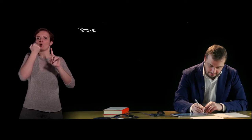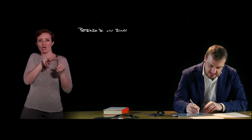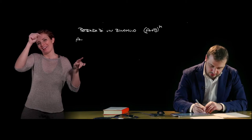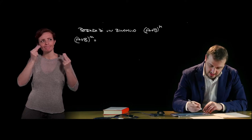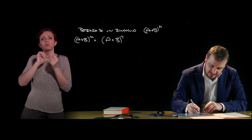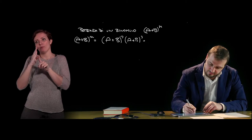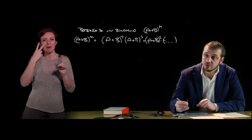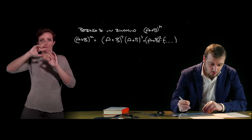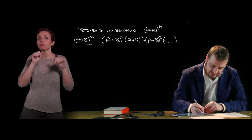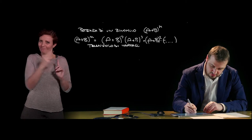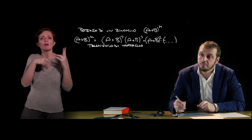Another very important product is the general power of a binomial, (a + b)^n. Generalizing what we saw for the square and the cube, we can reason by decomposing this power — for example as (a+b)³ × (a+b)³ × (a+b)² — using the expansions we have already seen. Alternatively, it is possible to use another operational structure called Tartaglia's triangle. Tartaglia's triangle is essentially a practical method used to know the various coefficients of the expansion of powers of binomials.